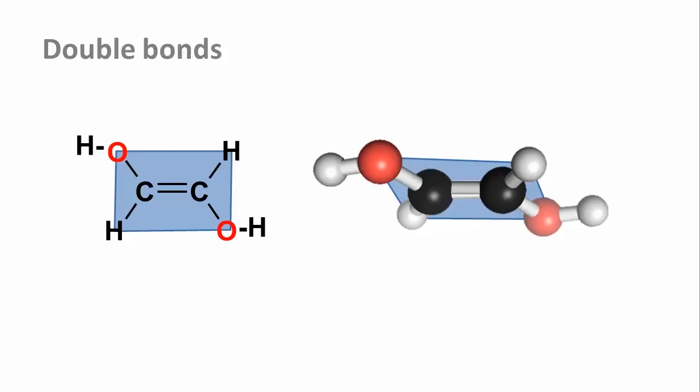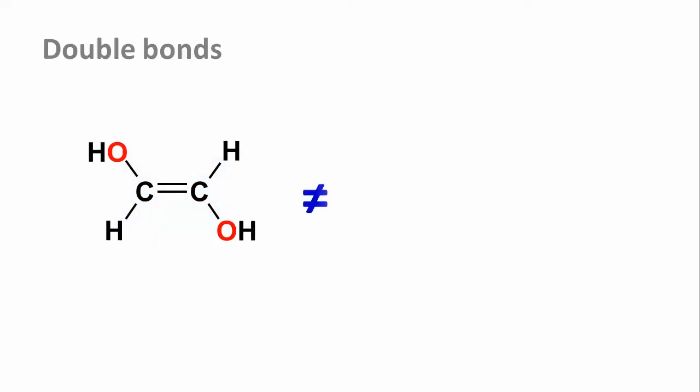An even more important consequence is that these two molecules are not identical. The two hydroxyl groups are on opposite sides of the plane in the molecule on the left and on the same side in the molecule on the right. You cannot convert one to the other by rotating the molecule around the carbon-carbon bond. It's a double bond that does not rotate.